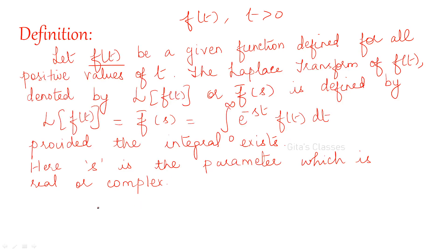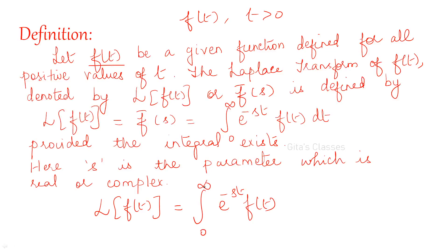This is the definition. If you want to find out the Laplace transform of f of t, it should be multiplied by e power minus st and integrated with respect to t from 0 to infinity. You are integrating with respect to the variable t and substituting the limits for t. After substitution, you will not have t — you will get a function of s alone.